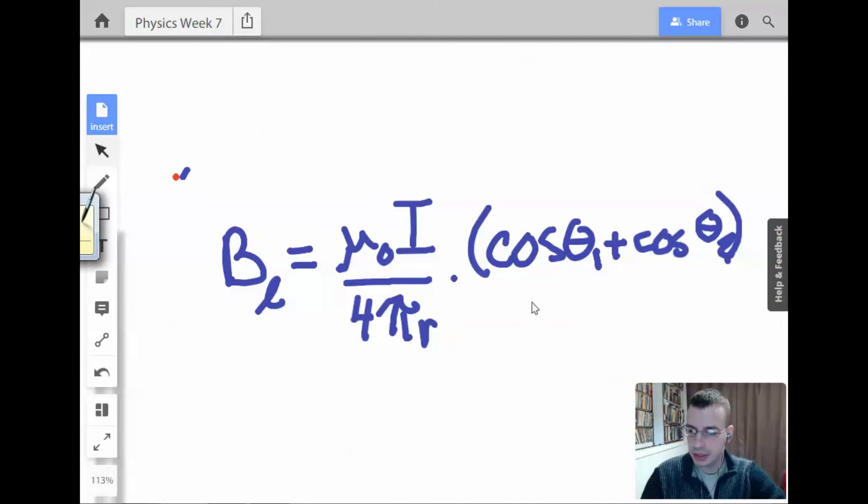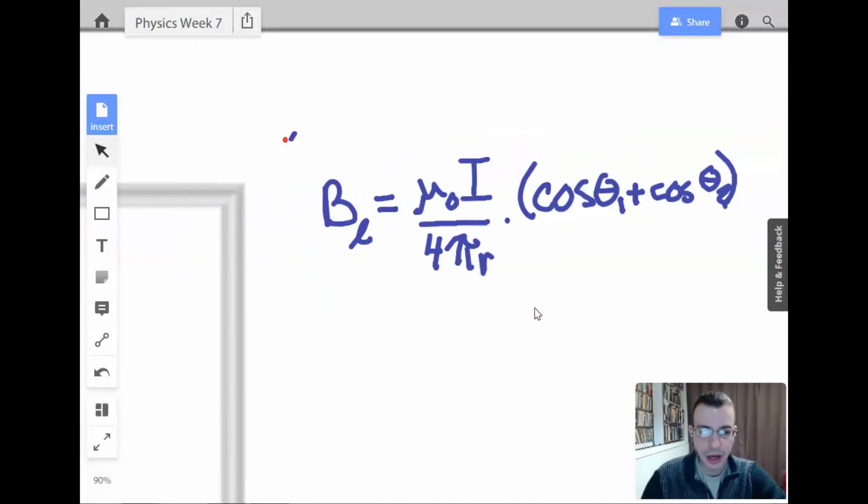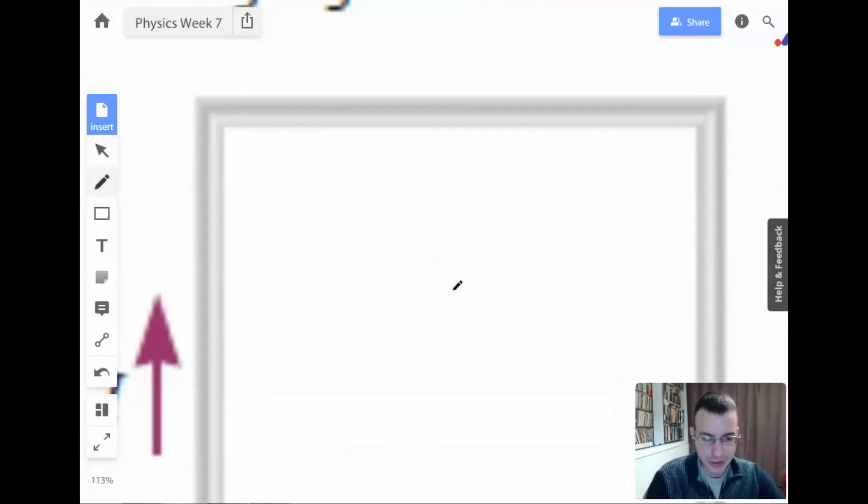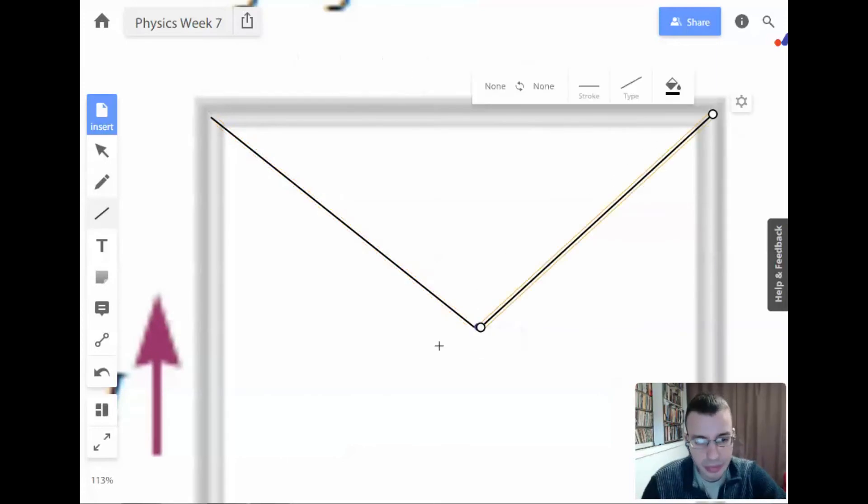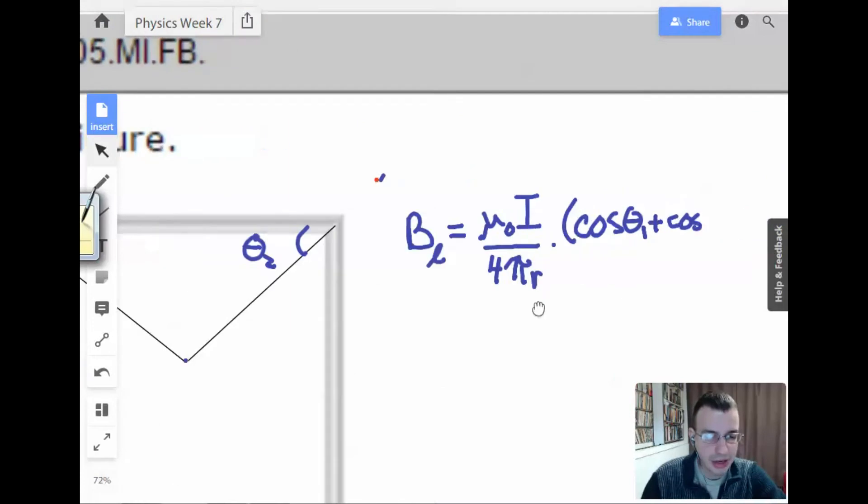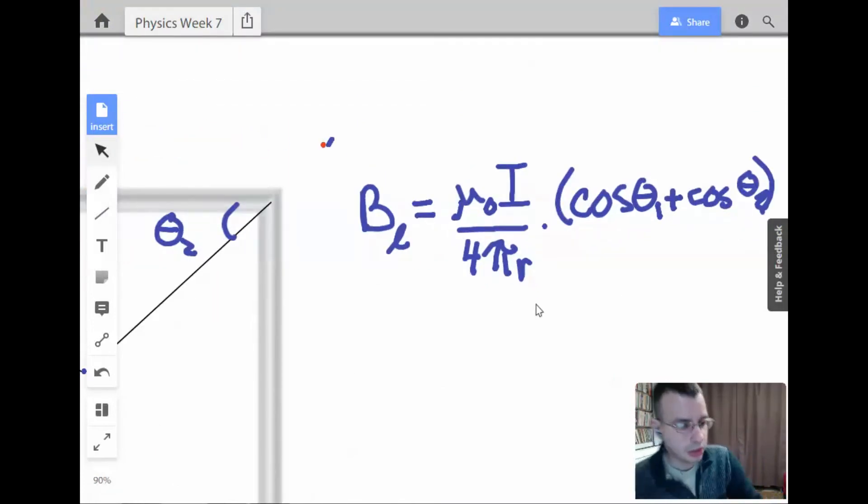To describe this, the center is right here. I'm going to draw a line. That guy right there will be theta 1, and this will be theta 2. The idea here is when you have an infinite line, that theta goes to 0.